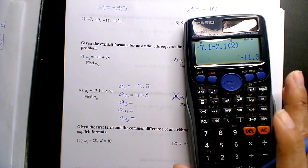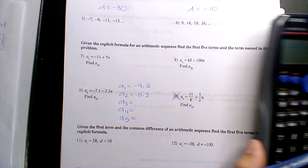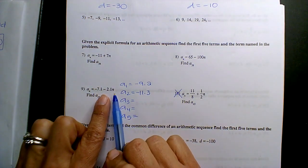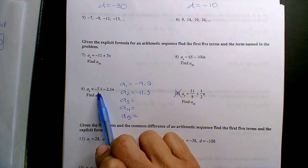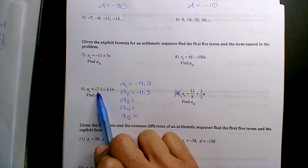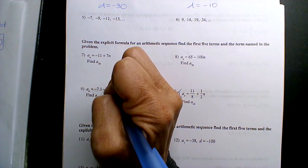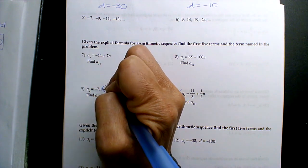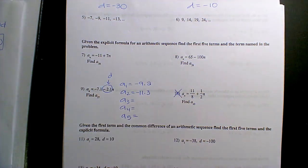Okay, you can go ahead and keep going. However, what is it decreasing by from term to term? Negative 7.1 is your initial term. This number here is my common difference, right?